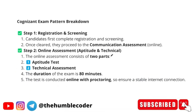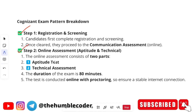Let's understand the pattern and breakdown for the GenC examination. Step one was registration — you completed registration, your resume was screened, and you got emails for your next assessments, which was the communication assessment. You have now cleared your communication assessment, and you are set to appear for the next assessment, which is going to be aptitude and technical — also an online assessment.